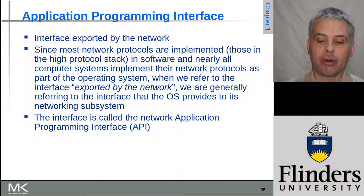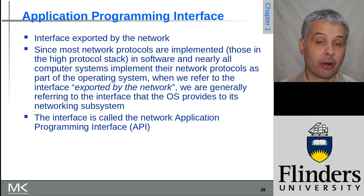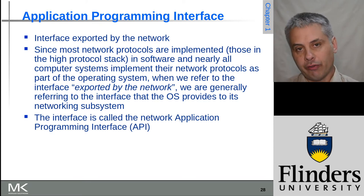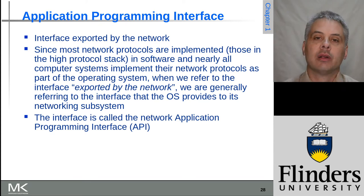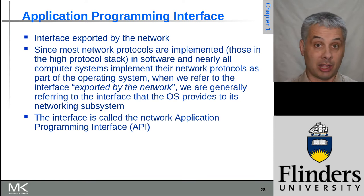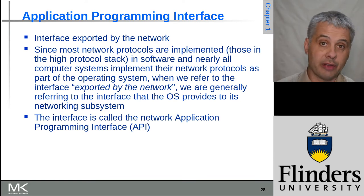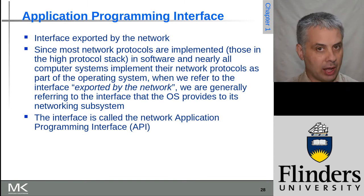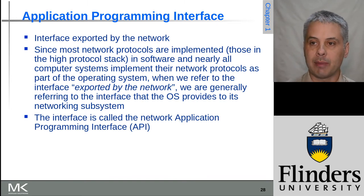Welcome back to Computer Networks. Today we're going to look at application programming interfaces — the interface that the network provides to us as programmers if we want to create network-enabled programs and applications. The operating system has a software implementation of the network protocols and provides us with a programming interface we can use. This is called the Application Programming Interface, or API for short.